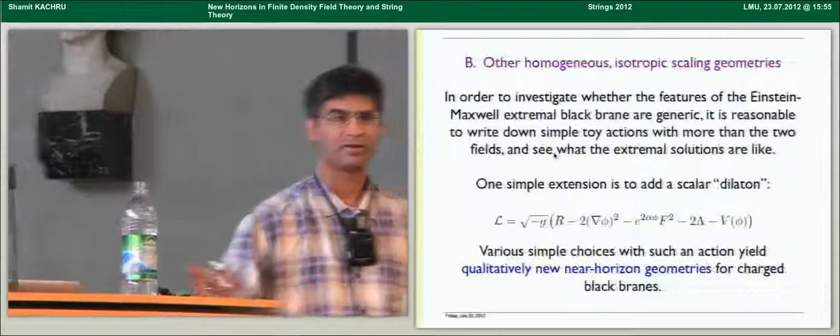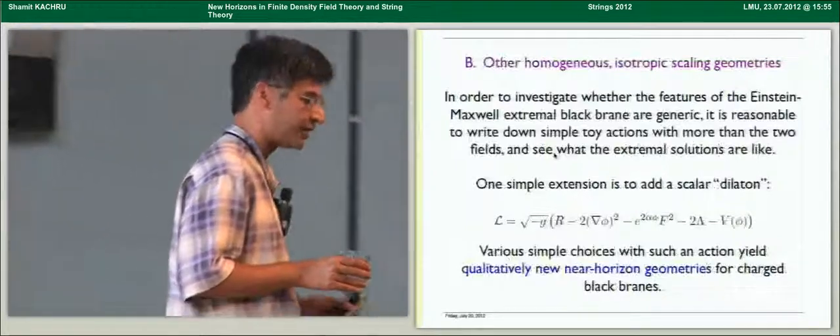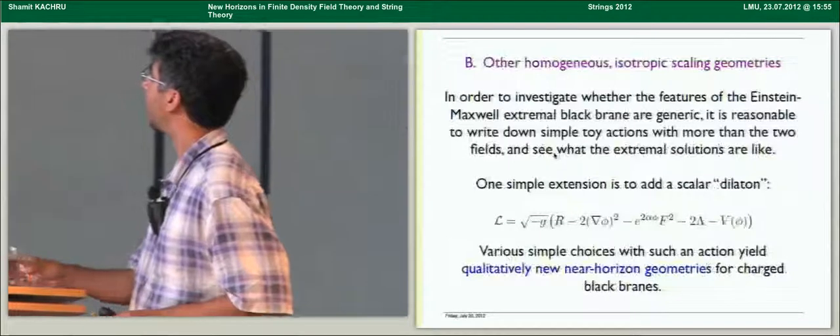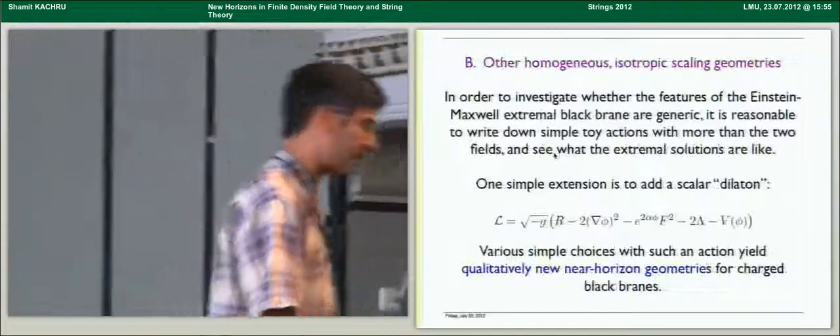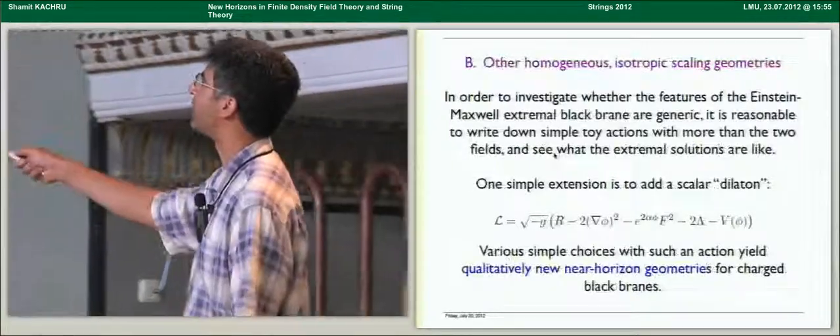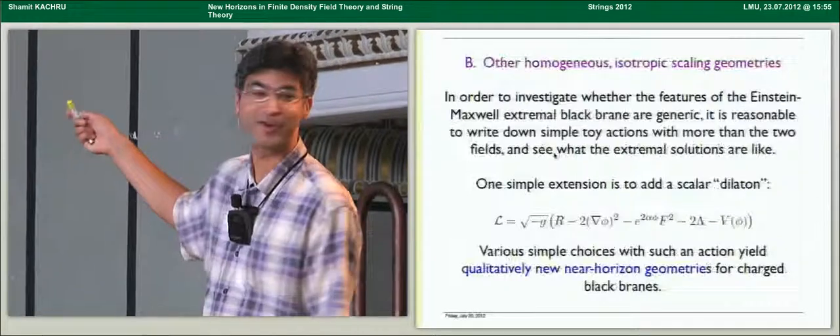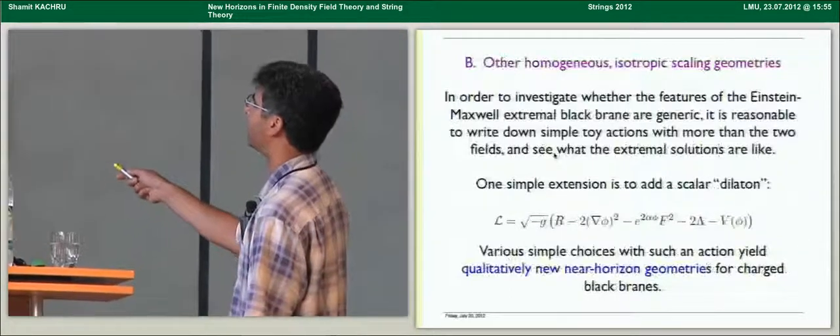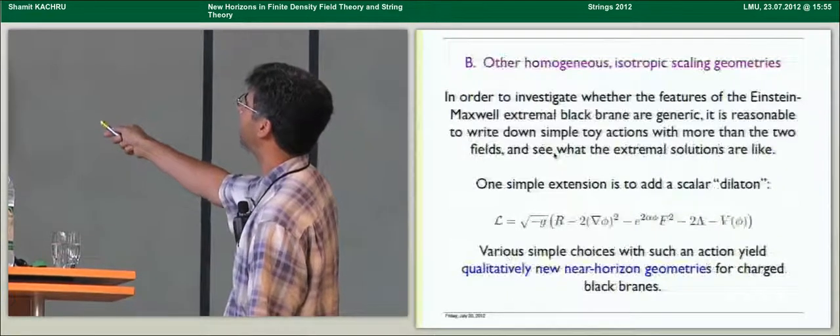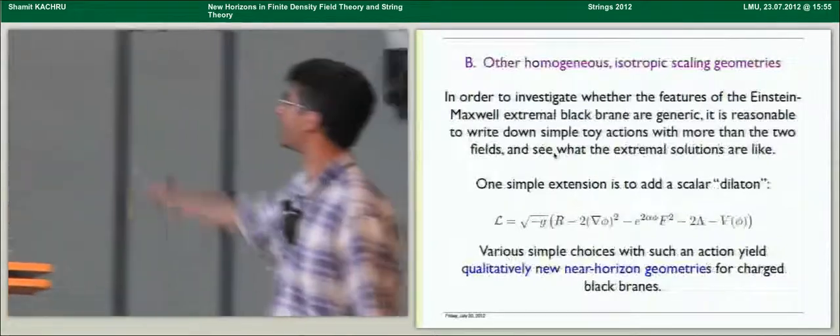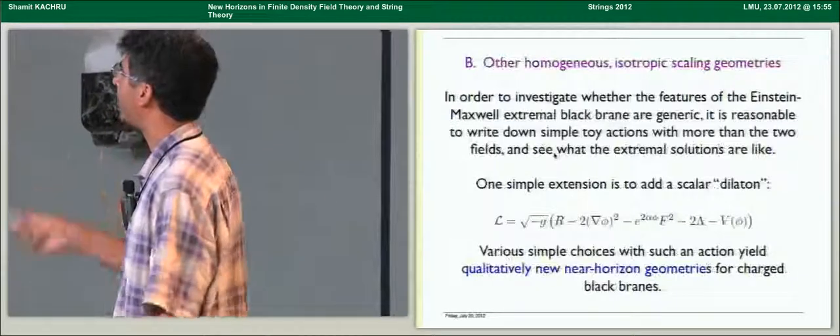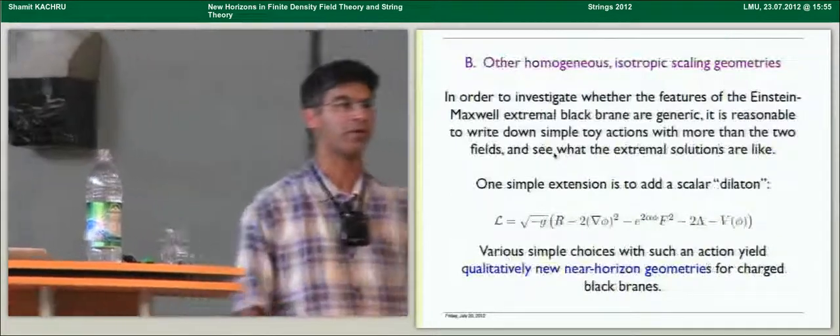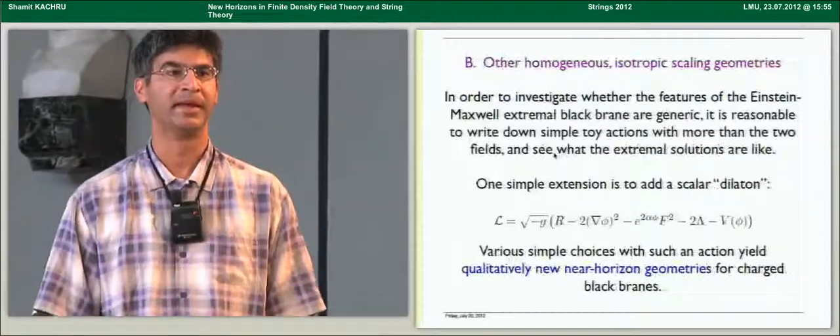So, the next question we might ask is, what happens if we start to make life a little more generic? Let's take John's advice and add parameters, or add both fields and parameters, and see if this result is robust. So, let's write down the simplest toy actions that have more than just the Einstein field and the Maxwell field. The simplest extension that you might think of, I think Gary will talk about the other simplest extension, which would be to add a charged scalar, will add a neutral scalar, a dilaton. So, the Lagrangian you might write would be something like Einstein plus a kinetic term, plus some gauge coupling that depends on the dilaton for the U1 field, and some potential, which I've separated out from the cosmological term.